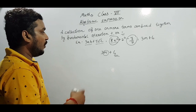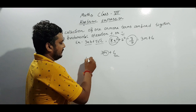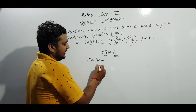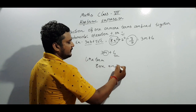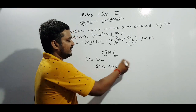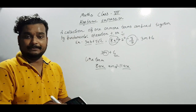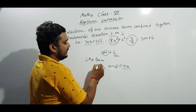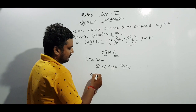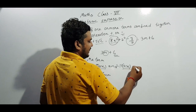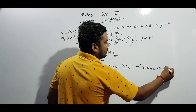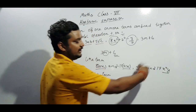Now let's come to like terms. If in any expression we have 8ax and the second term is minus 11ax, these are like terms because the variables are the same. Whenever variables are the same, those are called like terms. Another example: x²y and 17x²y are also like terms since x²y is the same variable in both.